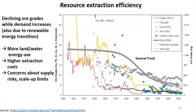Another category is resource extraction efficiency: how much energy, water, and capital do I need to invest to obtain a certain natural resource? Beyond the energy return on investment discussed in the energy indicators lecture, I want to focus on materials — specifically ores — and how the ore grade declines over time. The ore grade is the amount of metal oxides in an ore divided by the total mass of the ore. For different minerals shown — copper, lead, zinc, gold, and nickel — there is a slowly declining trend.